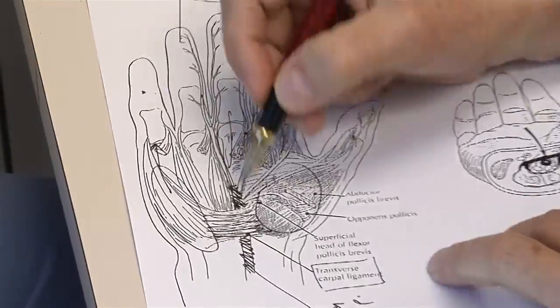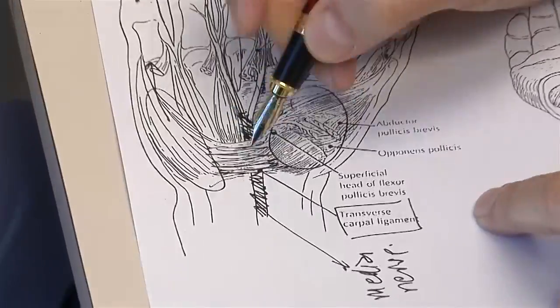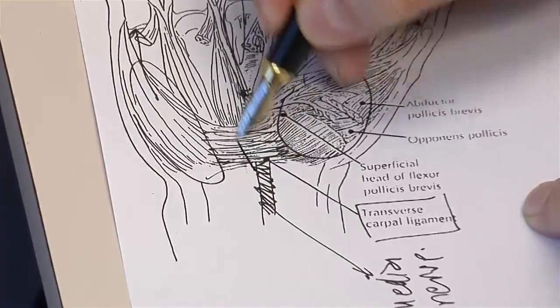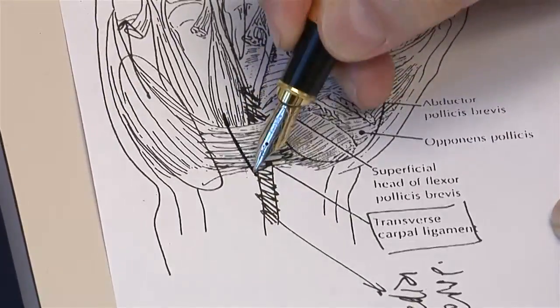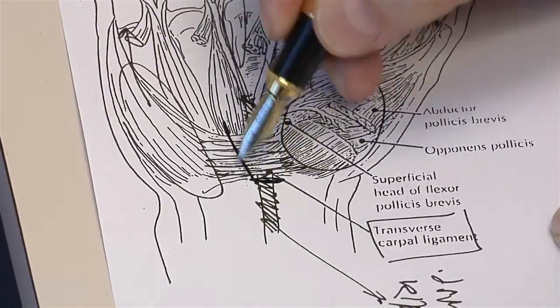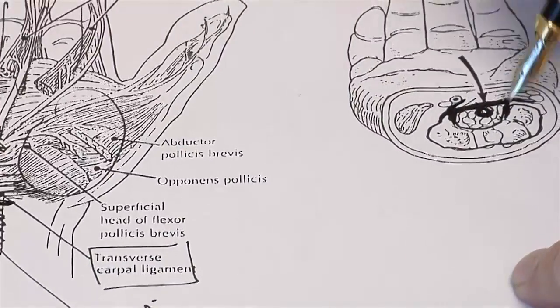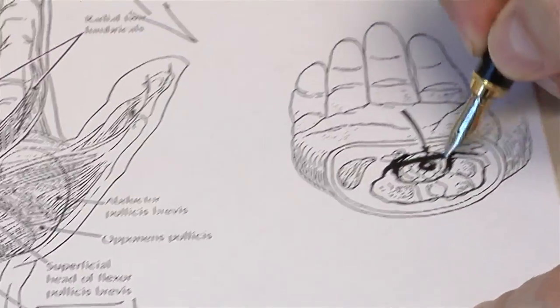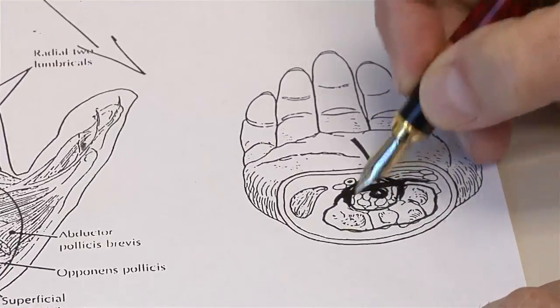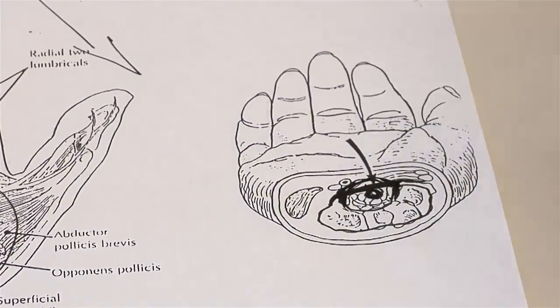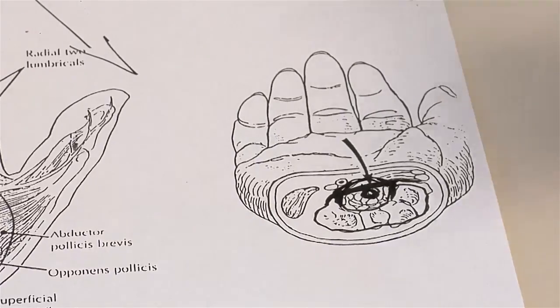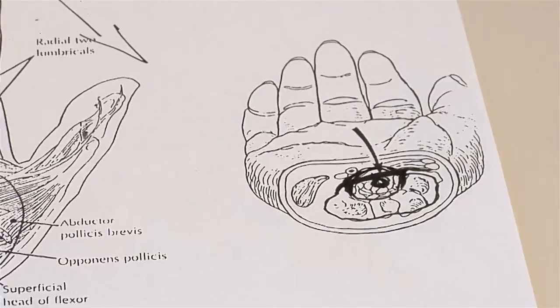What we do in surgery is use an incision that is about like a seven, cut that ligament, and when we cut the ligament it opens up and decompresses the nerve from the pressures that are contained within the carpal tunnel.